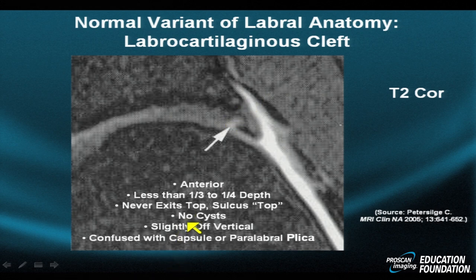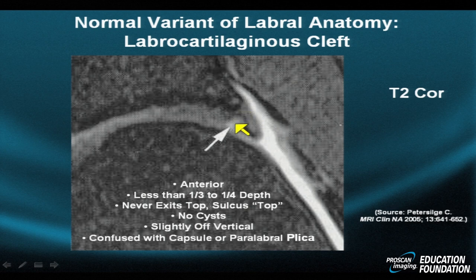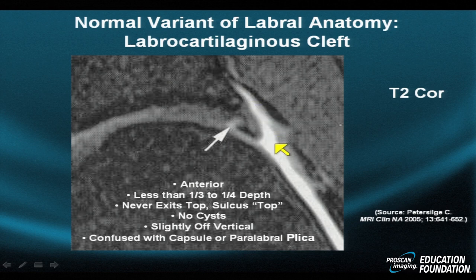Cysts are never present with a normal sulcus, but paralabral cysts or pseudocysts are common even with small labral tears. The normal sulcus is slightly off the vertical axis or plane — it is never parallel to the long axis of the labrum. Occasionally there will be little slits of hypointensity, a sneaky eye or paralabral plica, that may sometimes simulate a sliver of labrum that has been detached.